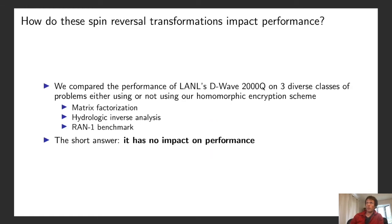Using classical fully homomorphic encryption incurs a very significant performance cost — the most impressive example I could find was Microsoft classifying around 50 MNIST digits per second. A natural question is: how do spin reversal transformations impact performance in quantum annealing? The short answer is that they have no impact on performance. This is expected theoretically, and we also compared performance using and not using spin reversal transformations on LANL's D-Wave across three different classes of problems with different structures.